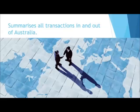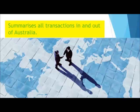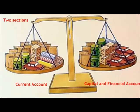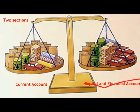What it does is summarise all the transactions in and out of Australia — every currency transaction between us and the rest of the world. There are two sections we talk about: one is called the current account, and the other, which balances all the financial transactions coming into Australia, is the capital and financial account.